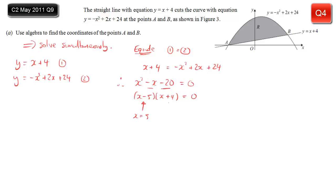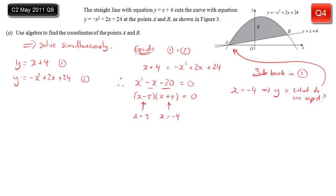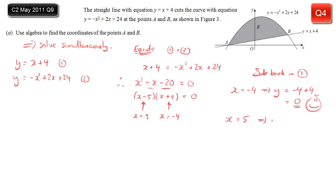The factors give x equals 5 and x equals minus 4. To get coordinates we need the y values, so we substitute back into equation 1, which is simpler. For x equals minus 4: y equals minus 4 plus 4 equals 0 — consistent with point A being on the x-axis as shown in the diagram. For x equals 5: y equals 5 plus 4 equals 9. So point A has coordinates minus 4, 0 and point B has coordinates 5, 9.